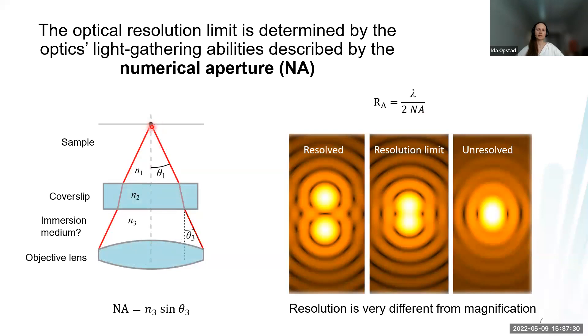The numerical aperture is the sine function of this half cone angle of collected light. The light goes through the coverslip, maybe some immersion media, and this determines the final angle captured by the objective.